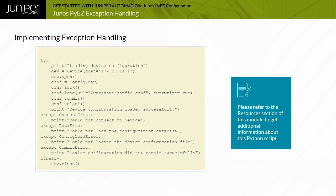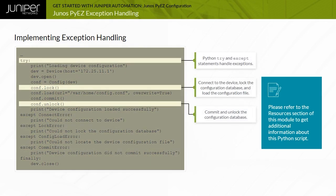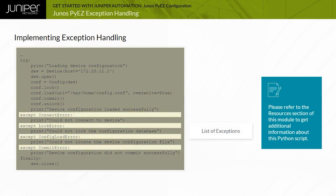Junos PyEasy leverages Python try-except statements to implement exception handling. The actions that the script is expected to perform are included under the try statement, followed by the except statements identifying exceptions that may be encountered during runtime, and determining what actions to take.